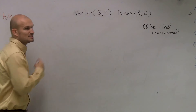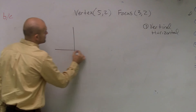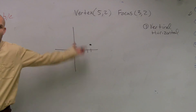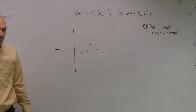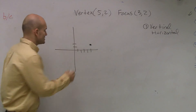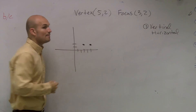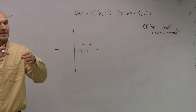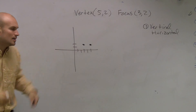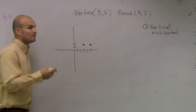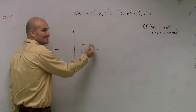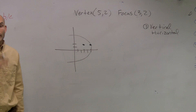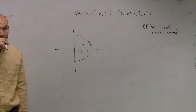The vertex is at (5, 2) and the focus is at (3, 2). Since the focus is inside the parabola, I can see from the diagram the parabola can't be vertical — it can't open up, down, or to the right. It has to open to the left. When the focus and vertex share the same y-coordinate, we know we're dealing with a horizontal parabola.